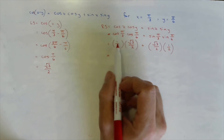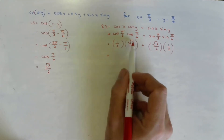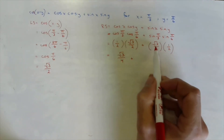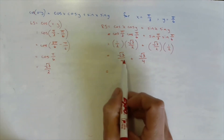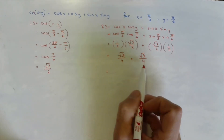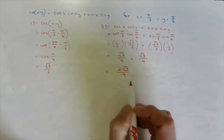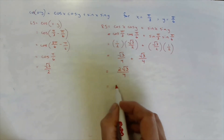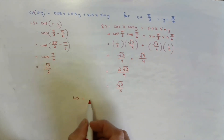The first term is half of radical 3 over 2, which is radical 3 over 4 — multiply top times top, bottom times bottom. The same thing happens with the second term: radical 3 over 4. So radical 3 over 4 plus radical 3 over 4 gives us 2 radical 3 over 4. Then 2 divided by 4 is 1 half, so we have 1 half of radical 3, or radical 3 over 2. Left side equals right side.